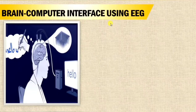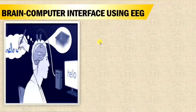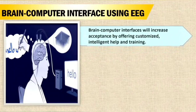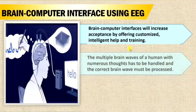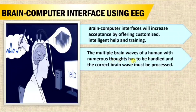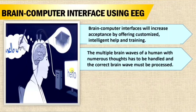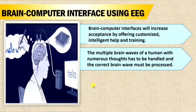The BCI here is implemented using EEG — an Electroencephalograph — which captures signals from the brain and displays them as a graph. BCI must handle the multiple brain waves of a human with numerous thoughts and process only the correct one. Since the person is driving, it captures the brain wave suitable to driving. To capture such signals, EEG technology is used.